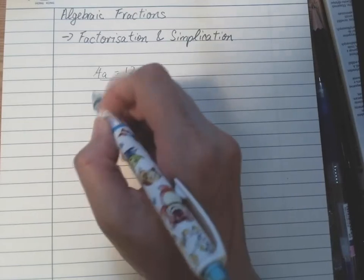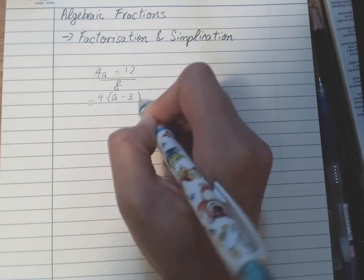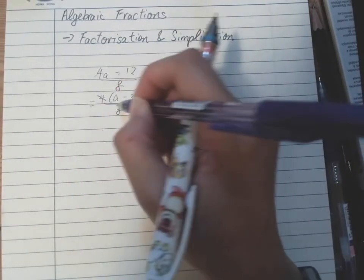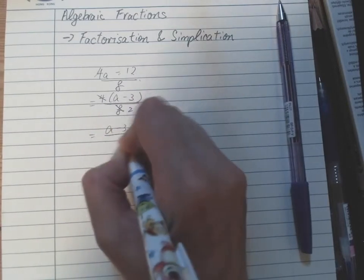We have the common factor of 4, so we have 4 times (a minus 3) over 8. Then you can cancel the 4 and 8, so we have 2. At the end, you have (a minus 3) over 2.